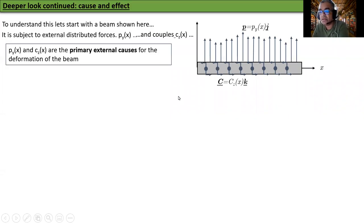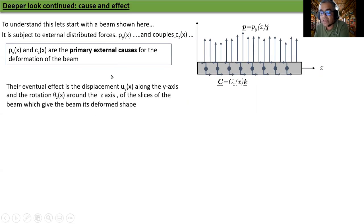PY and CZ are the primary external causes for the deformation of the beam. The eventual effect is the displacement UY along the Y axis and rotation theta Z around the Z axis of the slices of the beam which give the beam its deformed shape. This is what I meant when I said that there is a coordinated motion. UY of X is somehow coordinated and theta Z of X is somehow coordinated.